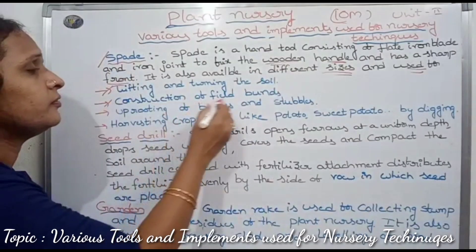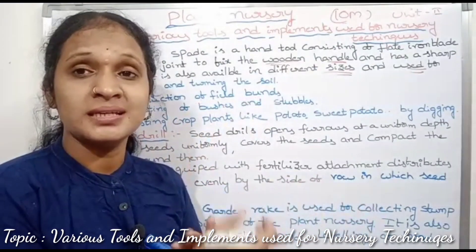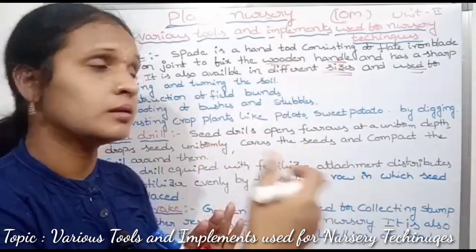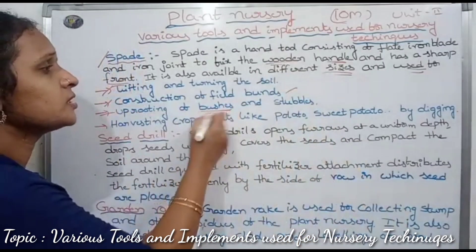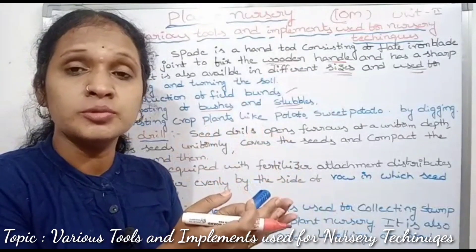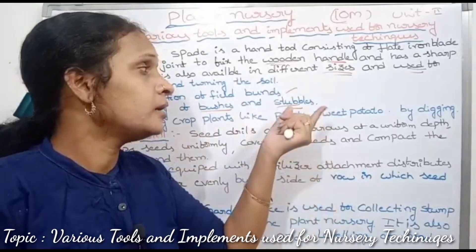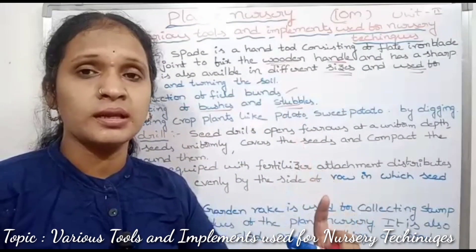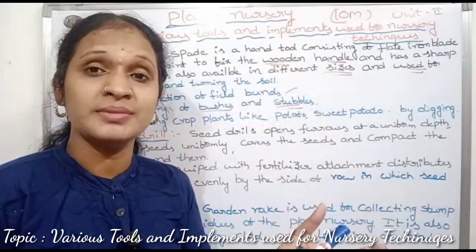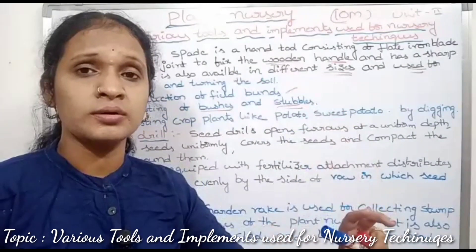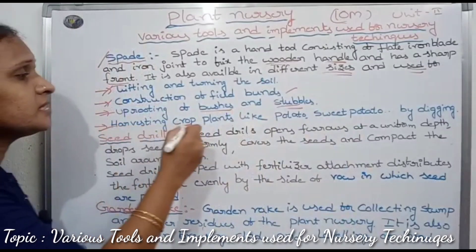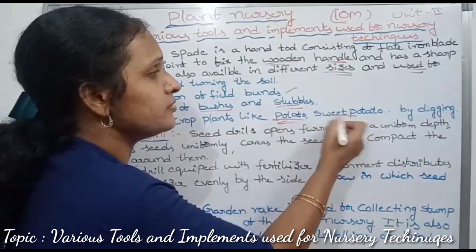The spade is used for the construction of field bunds. It is also used for the uprooting of bushes and stubbles. It is also used for digging up crop plants like potatoes and sweet potatoes.